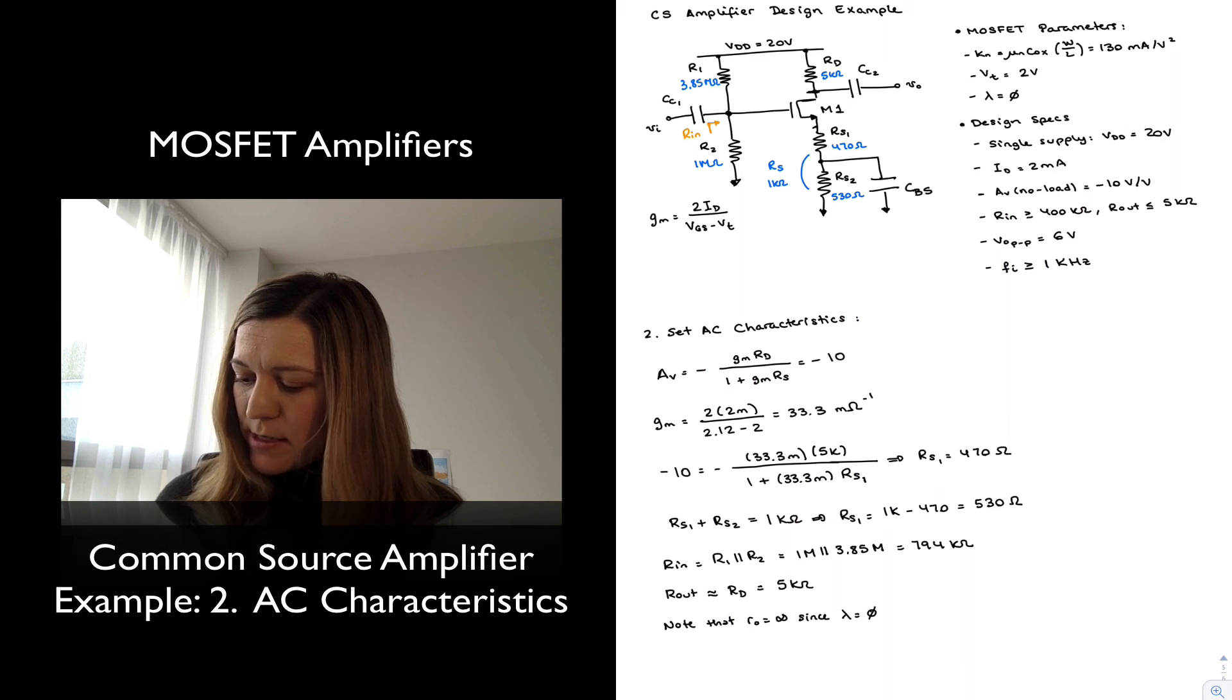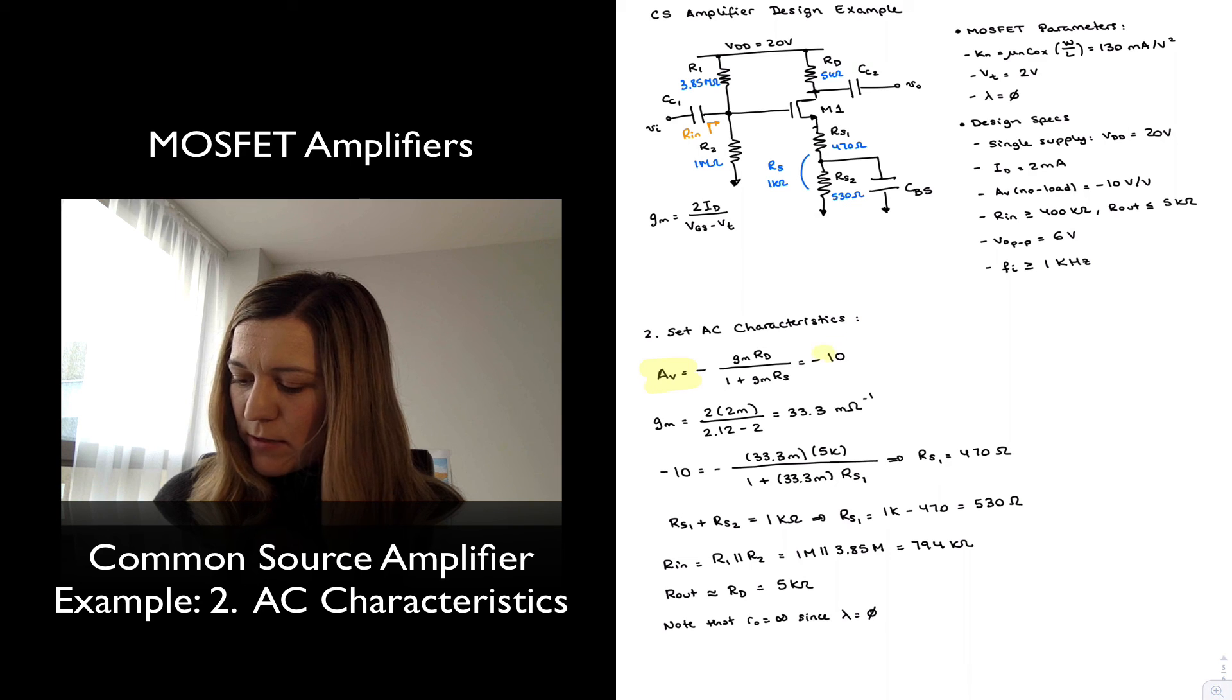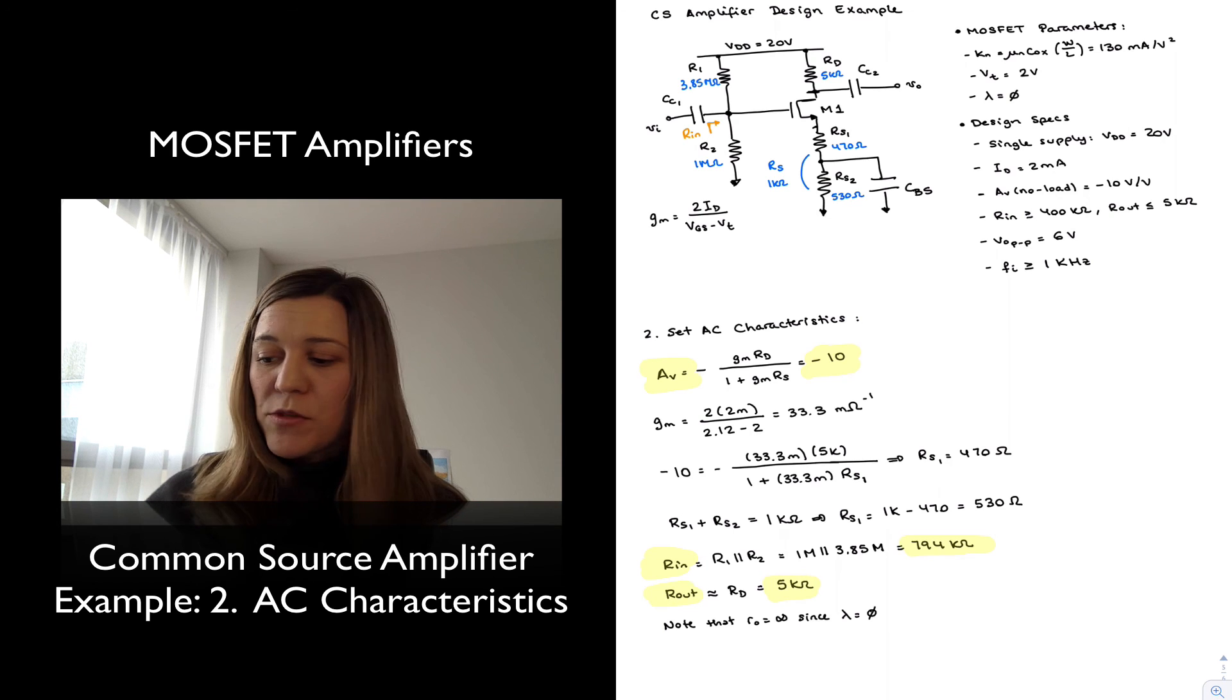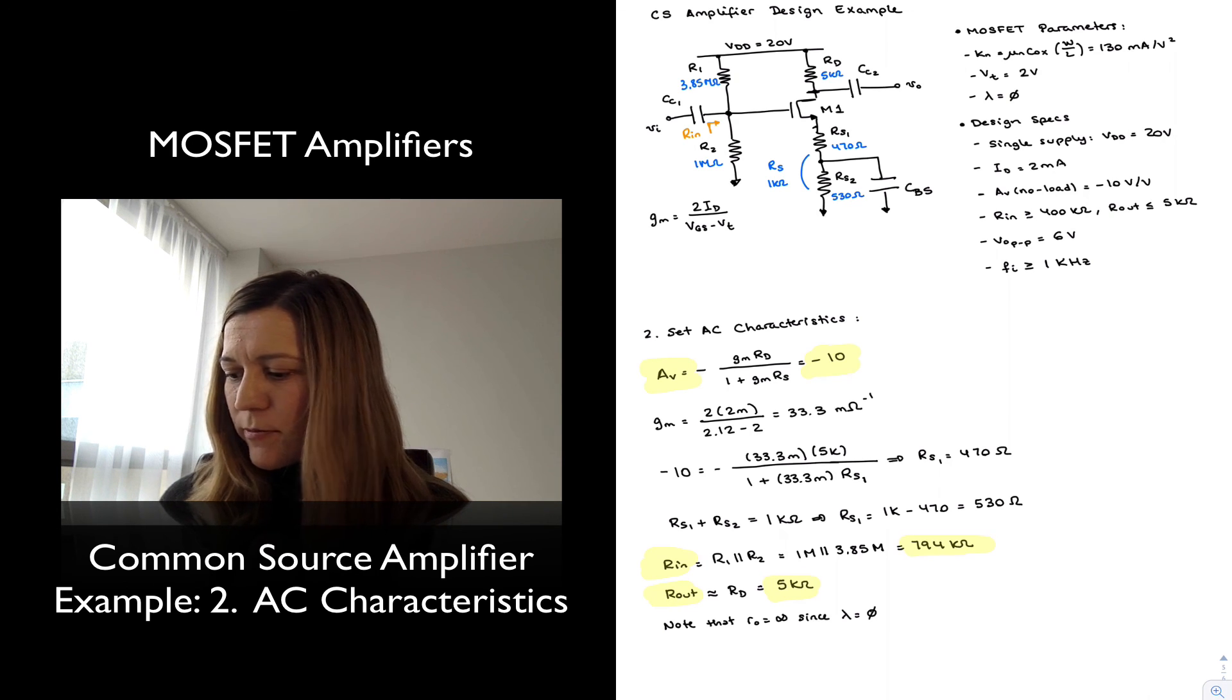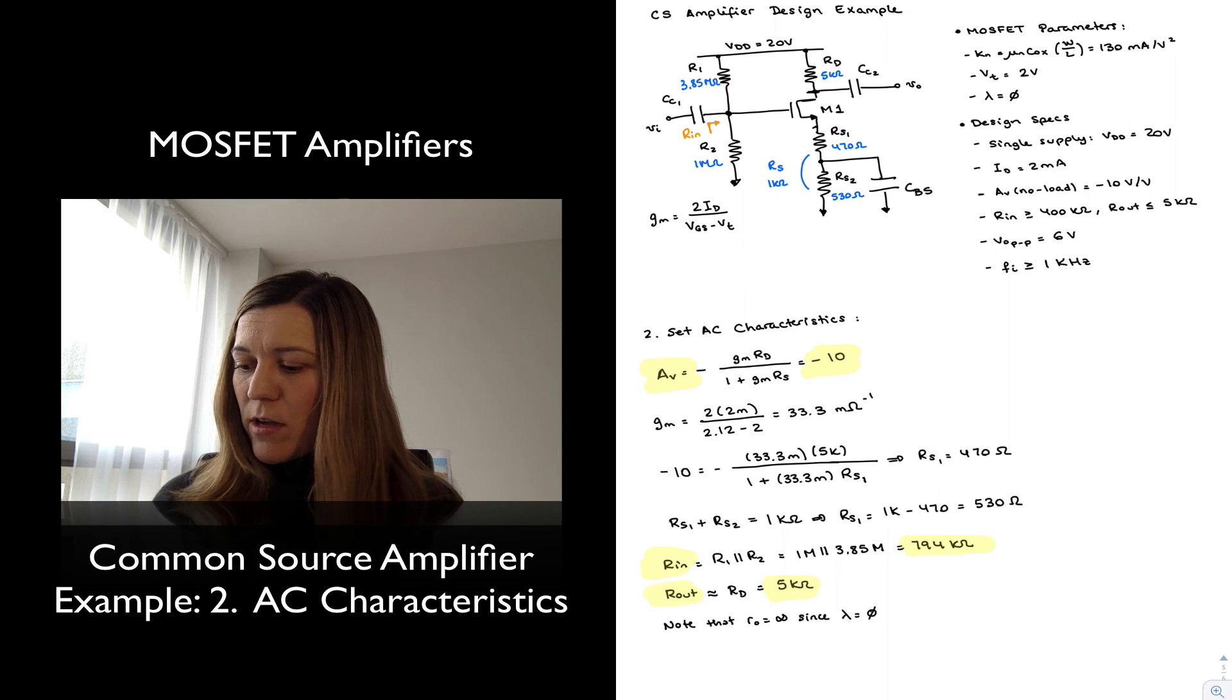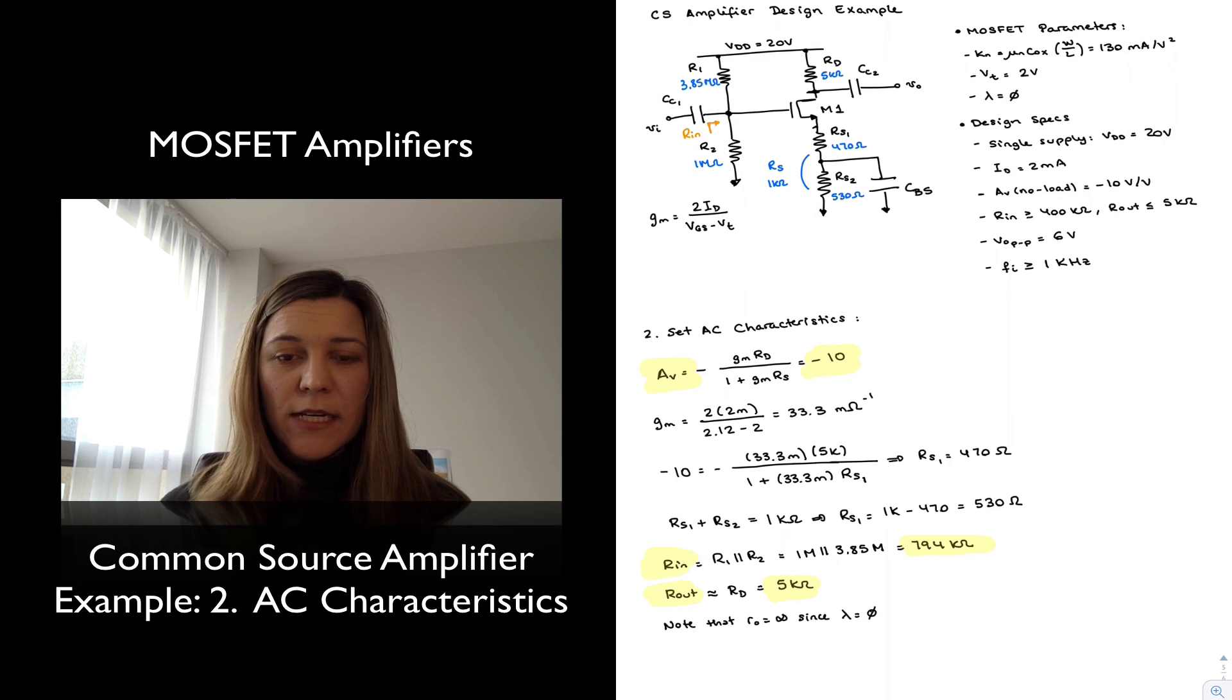All right, so those are my characteristics. My gain, AV is equal to negative 10, my input resistance, 794 kOhms, output resistance, 5 kOhms. So they're all met so far. My peak-to-peak output voltage is also met, because as we saw, the 5 kOhm resistance sets my drain voltage at 10 volts, and therefore I have obviously more than 6 volts peak-to-peak, but certainly I'm meeting that requirement. So that's it for the AC characteristics. The last part of the design is going to be setting the frequency response of the circuits. Thank you.